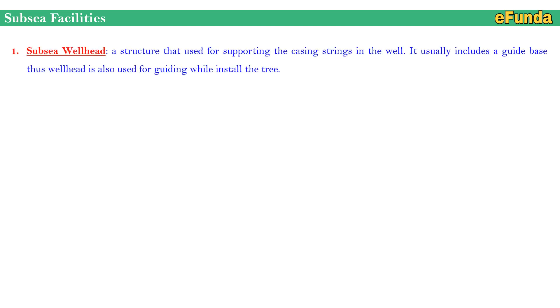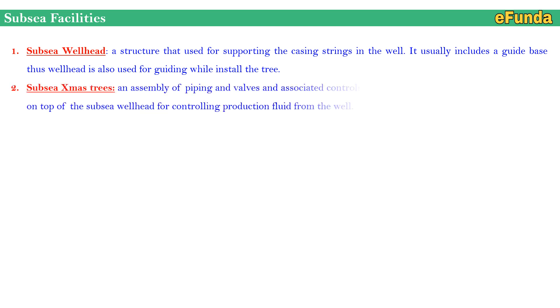Subsea facilities components: First, the subsea wellhead — a structure used for supporting the casing string in the well, usually including a guide base. The wellhead is also used for guiding during tree installation. Second, the subsea Christmas tree — an assembly of piping, valves, and associated controls and instrumentation that lands and locks on top of the subsea wellhead for controlling production fluid from the well.